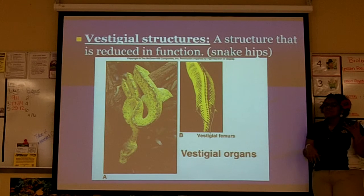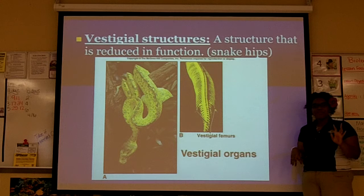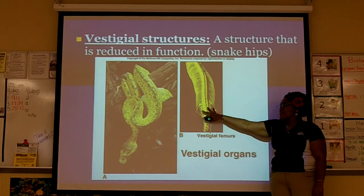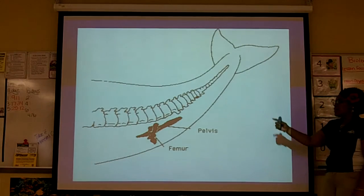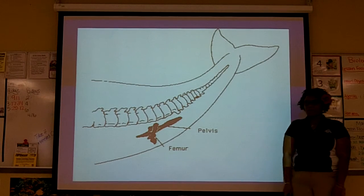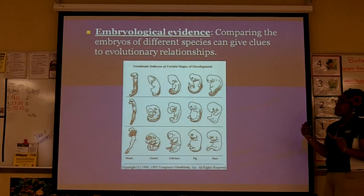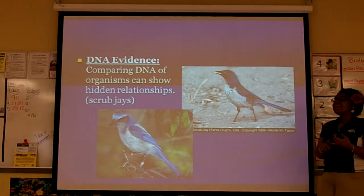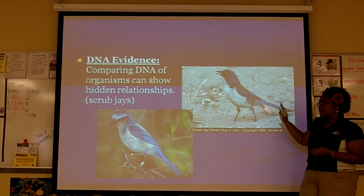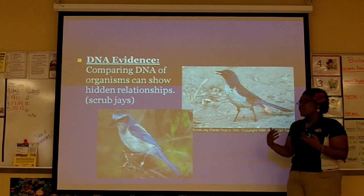Vestigial structures are structures that, over time, aren't used — like the concept of 'use it or lose it,' but not exactly. In the case of the snake, it has vestigial femurs that aren't necessary. Even the femur and pelvis of a whale — they have them, but they're not a necessary part of their overall structure. Embryological evidence helps us compare how organisms develop in the embryo to determine evolutionary relationships. DNA evidence is a big one — you can compare the DNA of organisms to see how they're related, like the western scrub jay and the Florida scrub jay, which unfortunately is endangered. We can find hidden relationships by comparing their DNA.